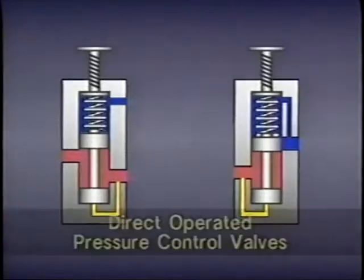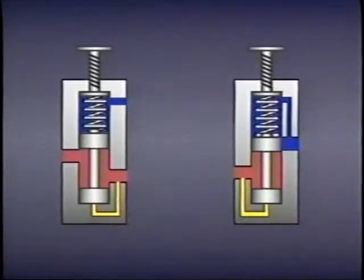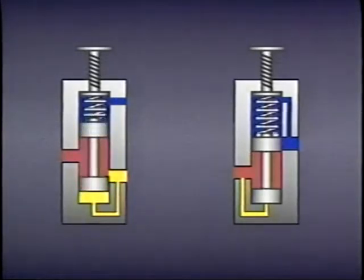The pressure control valves we've seen so far have their spools biased by springs. When the tension force of the spring is overcome by fluid pressure, the valve spool moves, changing the state of the valve.